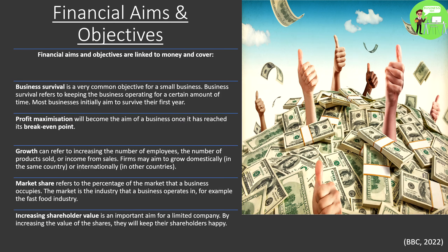Next is growth. Growth can refer to increasing the number of employees, the number of products sold, or income from sales — there are many different things growth can refer to. Firms may aim to grow domestically, which is in the same country as the business originates from, or internationally, which means expanding to other countries.